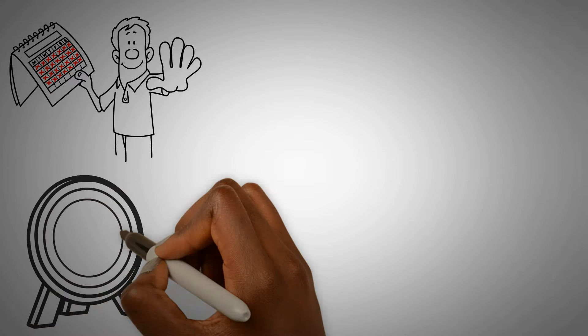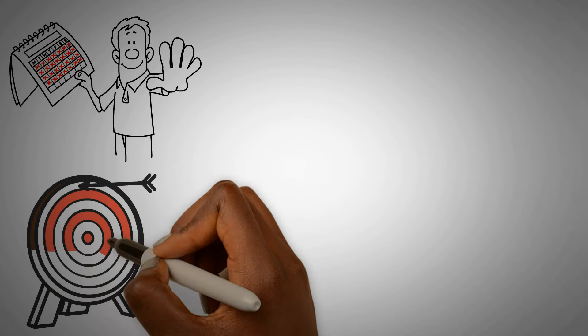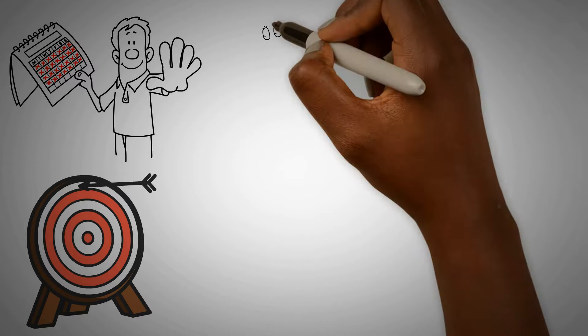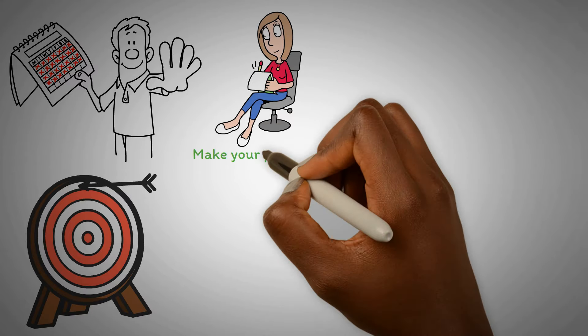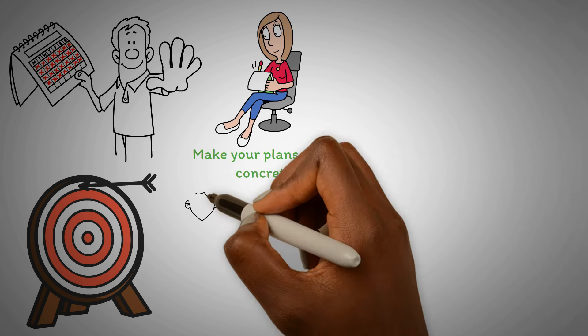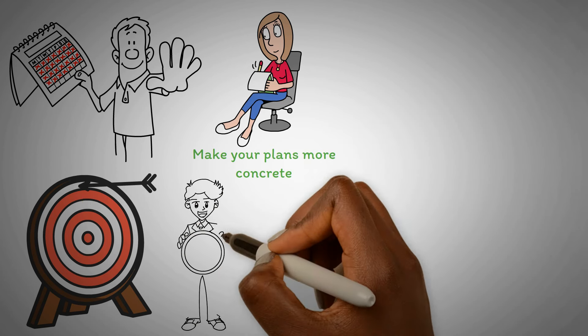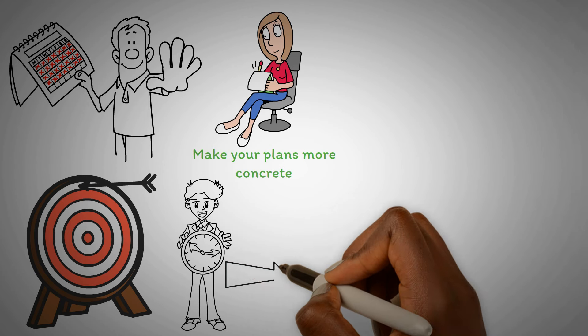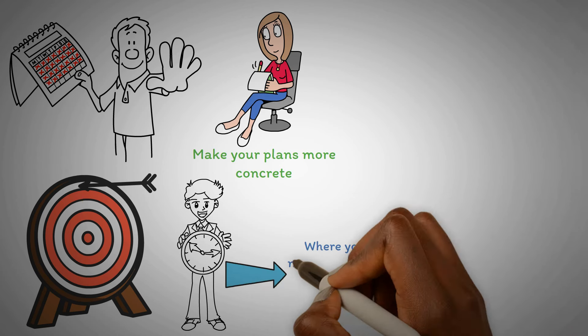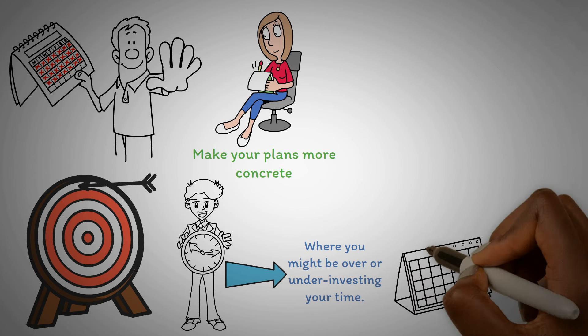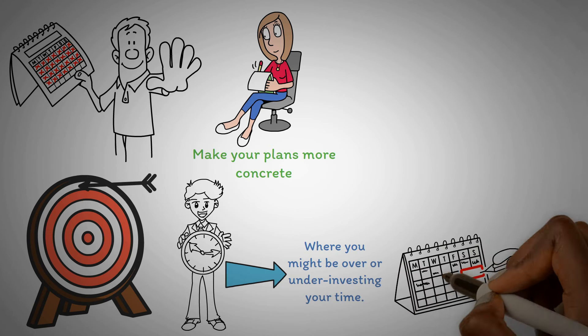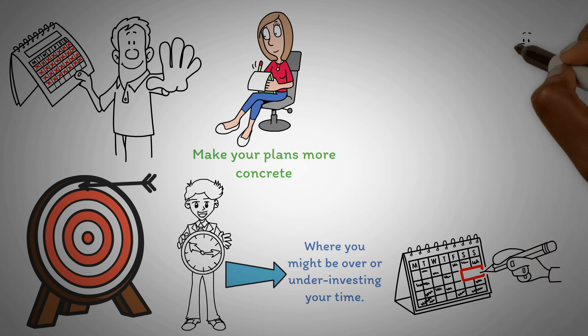Surprisingly, a few tweaks to your daily routine can significantly boost your productivity. Firstly, jot down your daily goals and tasks. Visualizing your day's agenda, perhaps on a calendar or an app, can make your plans more concrete. Secondly, assess the time you allocate to each task. This helps pinpoint where you might be over or under investing your time. Thirdly, schedule regular breaks and anticipate potential hurdles.